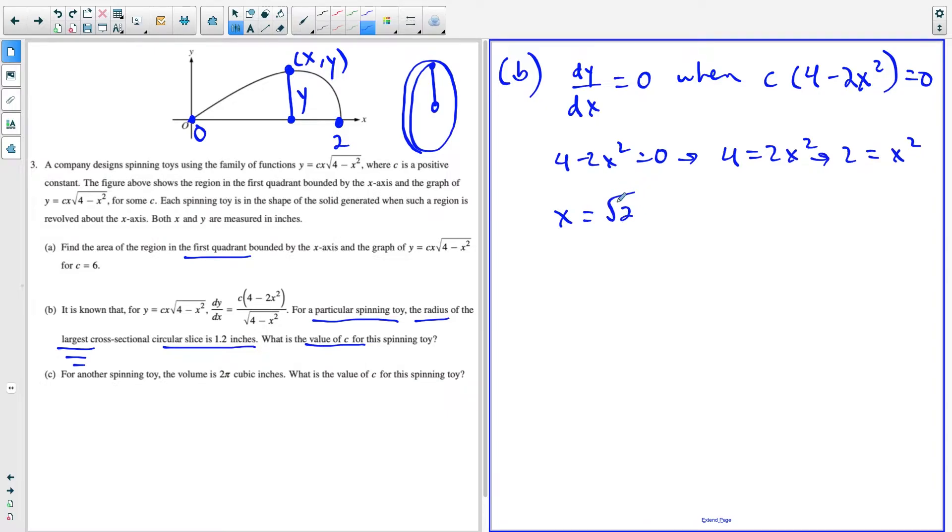And this gives you x equals square root of two. And I'm not going to go with plus or minus here, because once again, we're in quadrant one. So we're going with x equals square root of two.